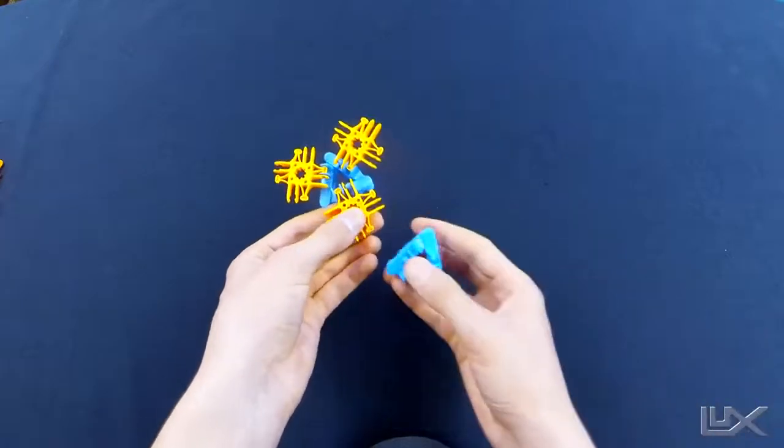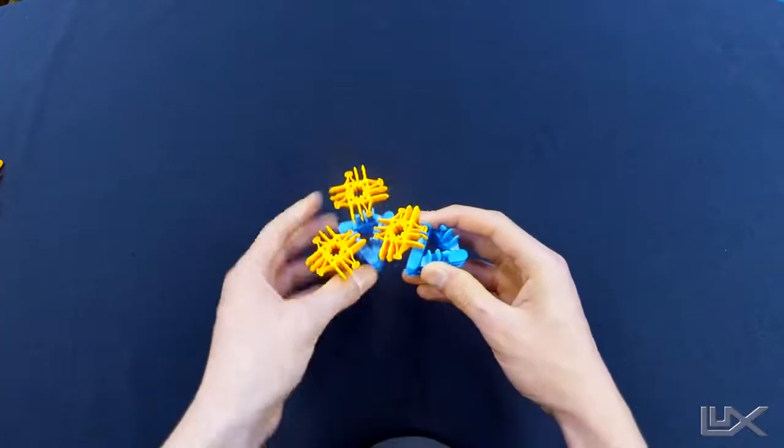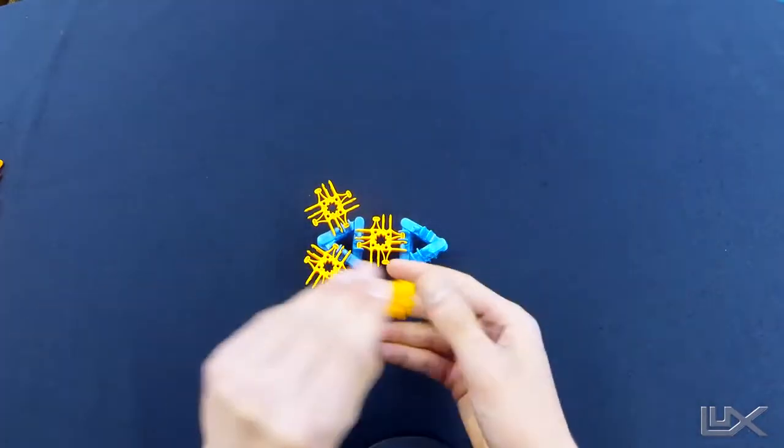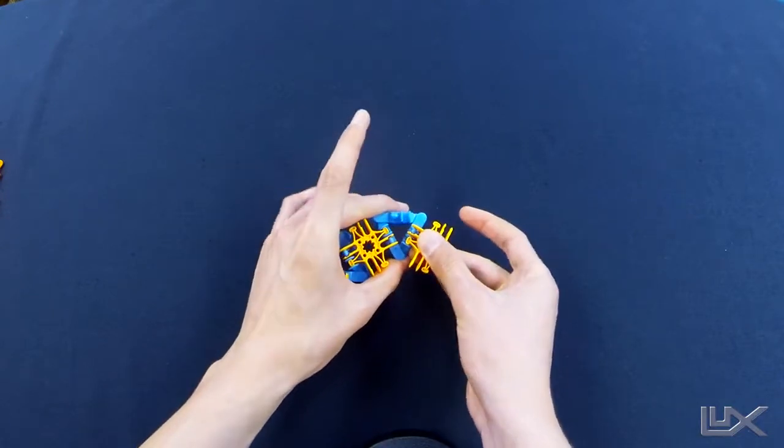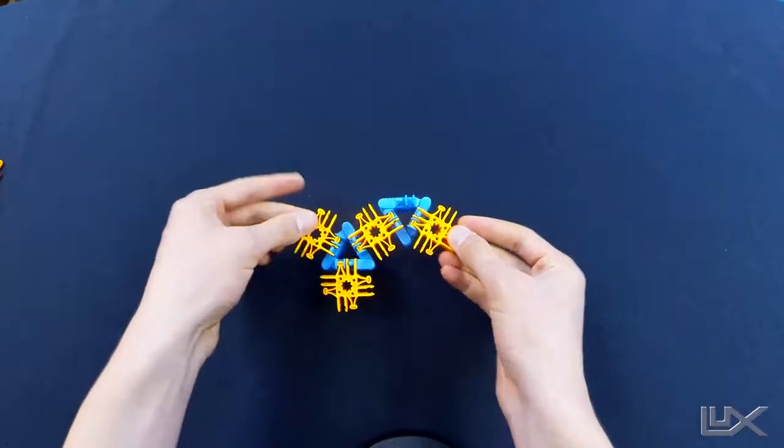So essentially what we're going to keep doing is we're going to keep adding on prisms. But when you add on a prism you always have to make sure that it's followed by another one of the squares. See the pattern?